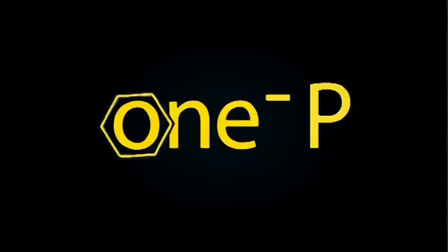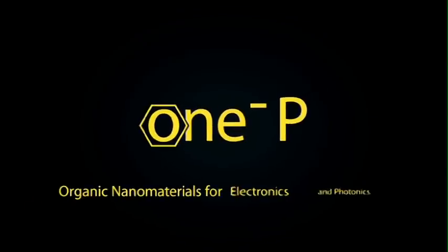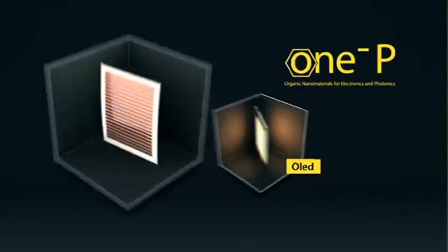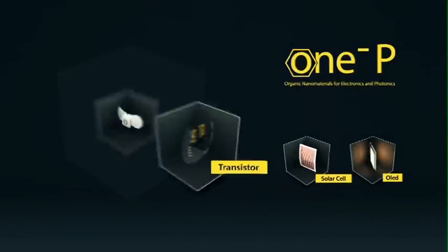One-P is the European research project pushing the borders in the field of new materials for lighting, solar cells, transistors and sensors.